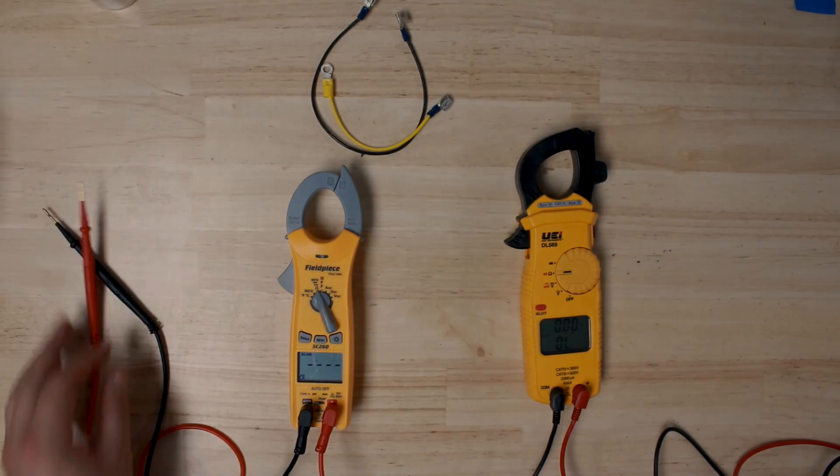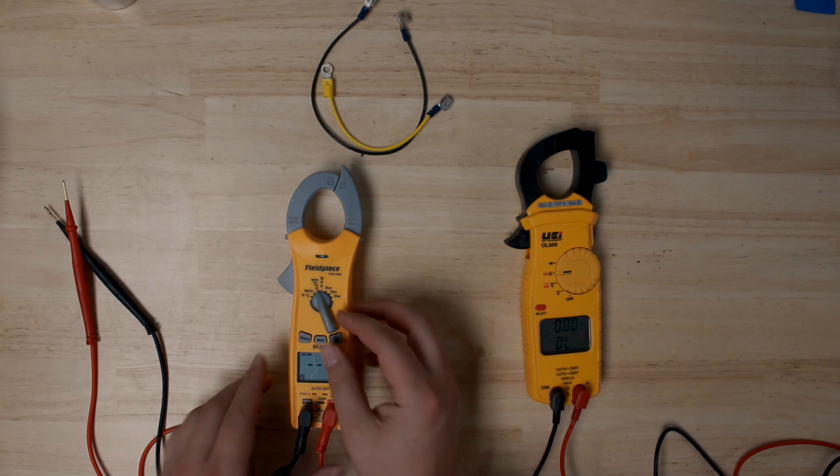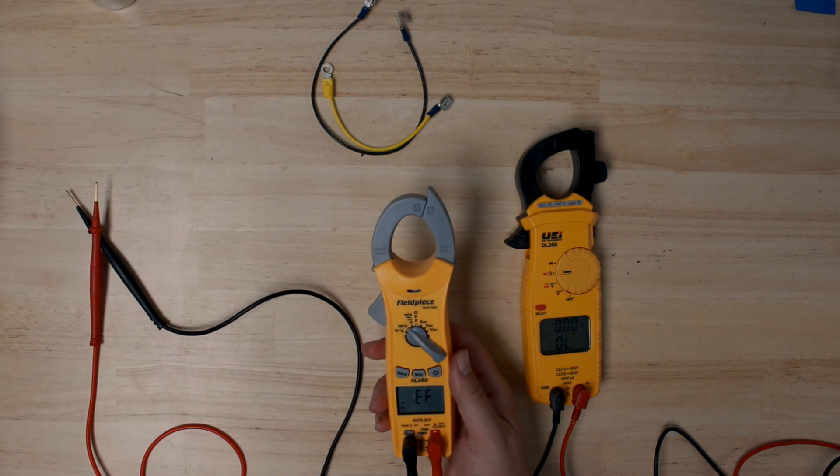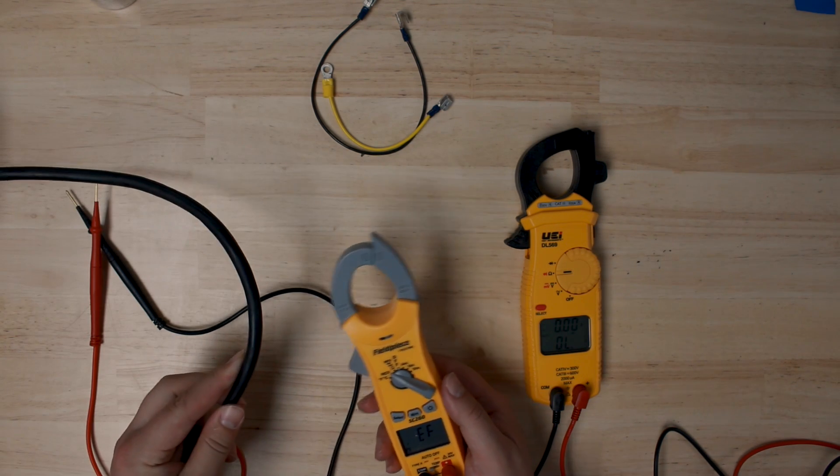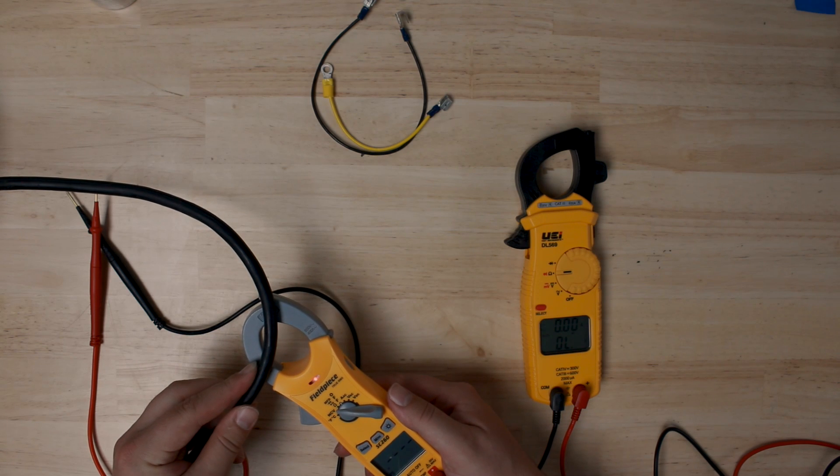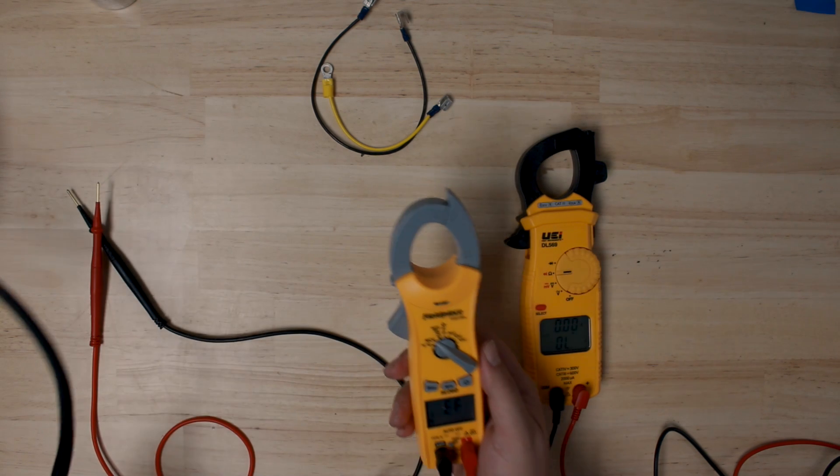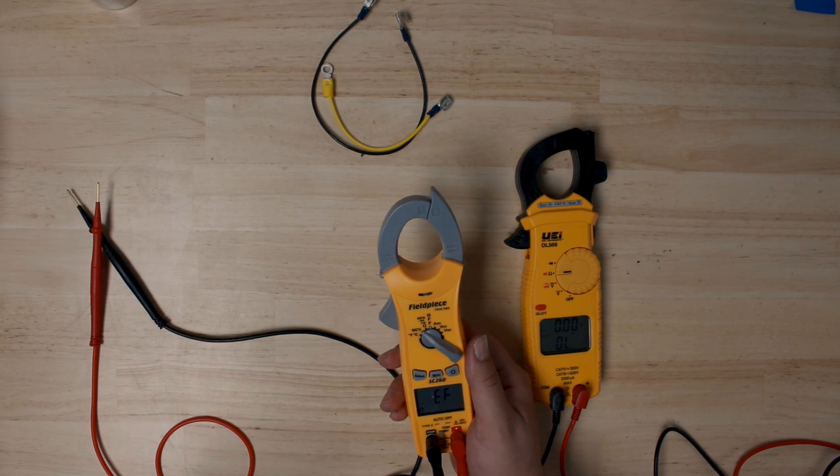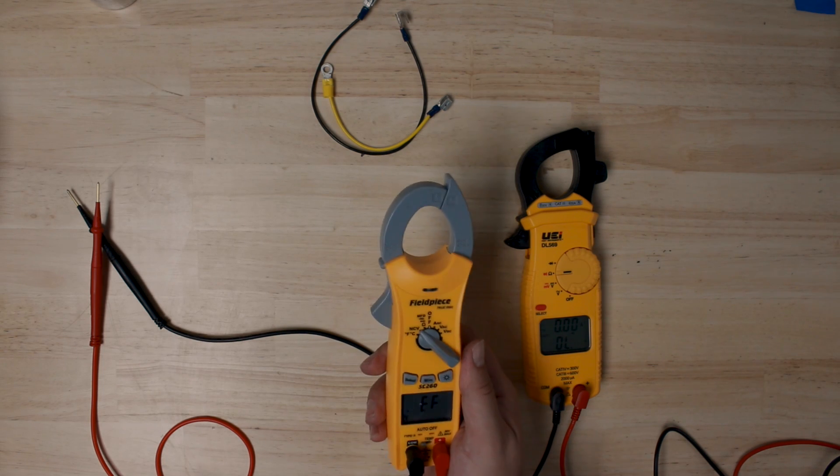The last thing your meter can do - and the Fieldpiece can do this but the UEI cannot - is non-contact voltage. This is NCV on the meter. It kind of turns it into a Harry Potter wand, basically. If you have a live wire and want to make sure there's power on, you can just put the meter close to the power source, and it will show that it is a live circuit. This is great if you're going up to a unit and just want to check if there's power without having to take a voltage reading.